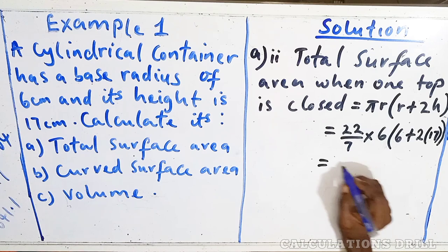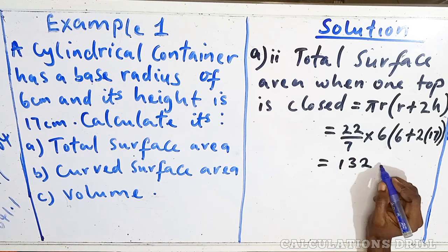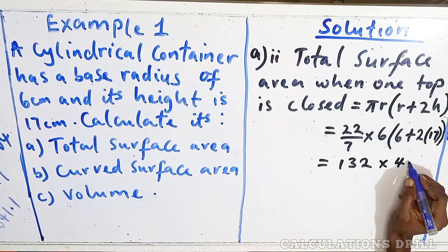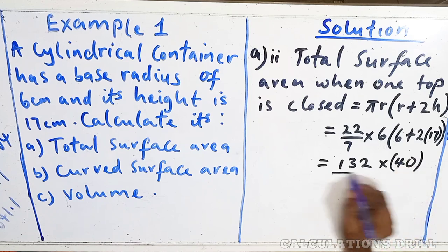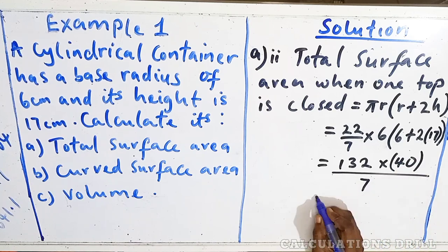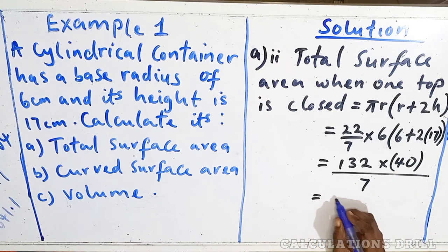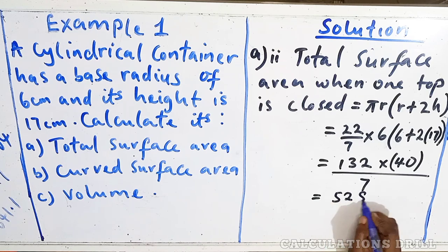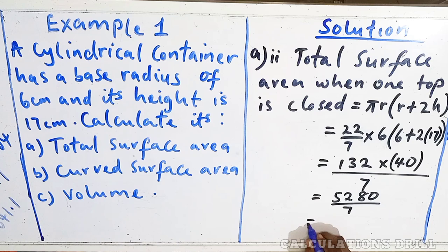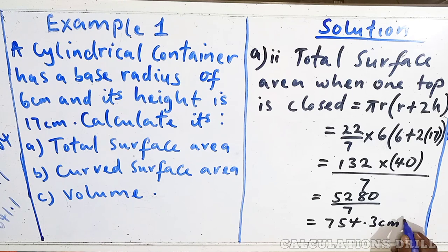So, when we do that, we're going to get 132 times 40/7. And our final answer is we give us 5280/7. When you use your calculator, that will give you 754.3 cm².